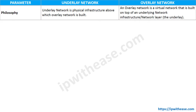Now let's understand the differences between overlay network and underlay network. First, philosophy: the underlay network is basically the physical infrastructure which is responsible for constructing the overlay networks. The overlay network is constructed above the underlay network. The overlay network is defined as a virtual or logical network built on top of the underlying infrastructure, that is, the underlay network.